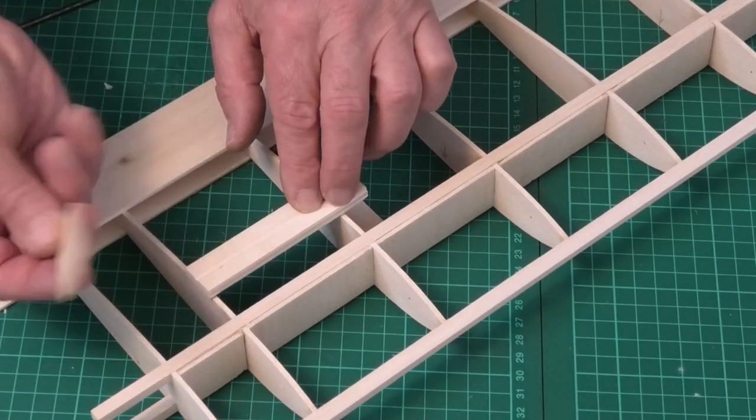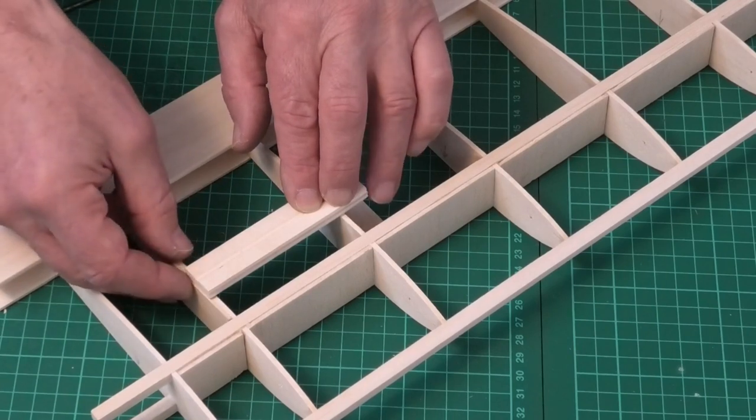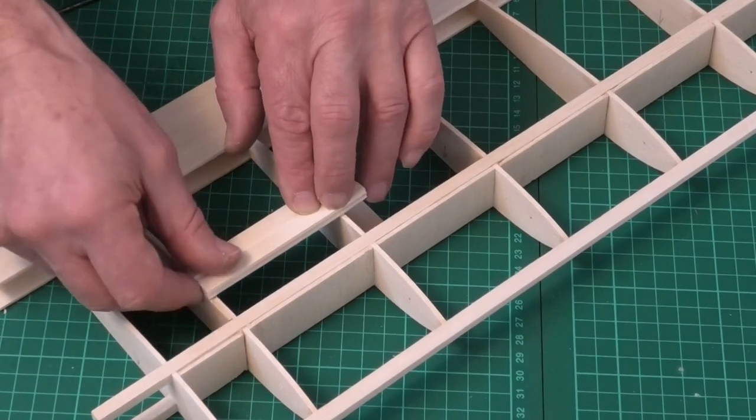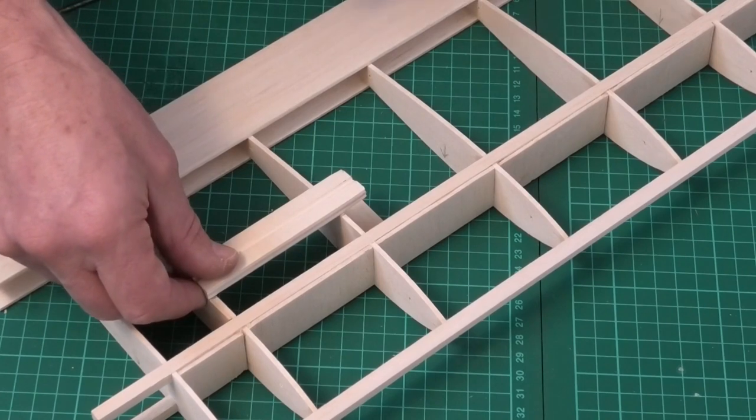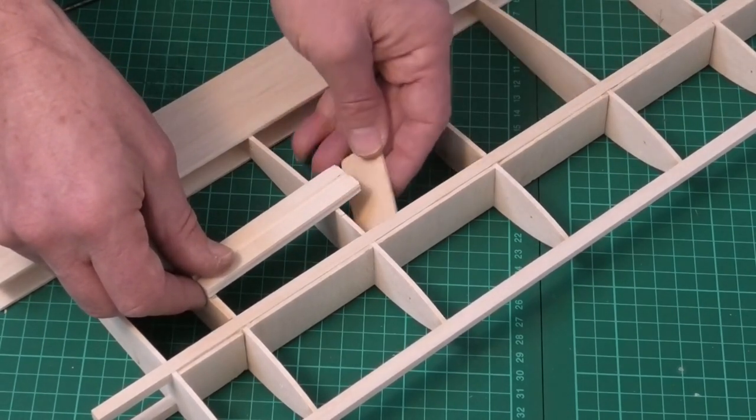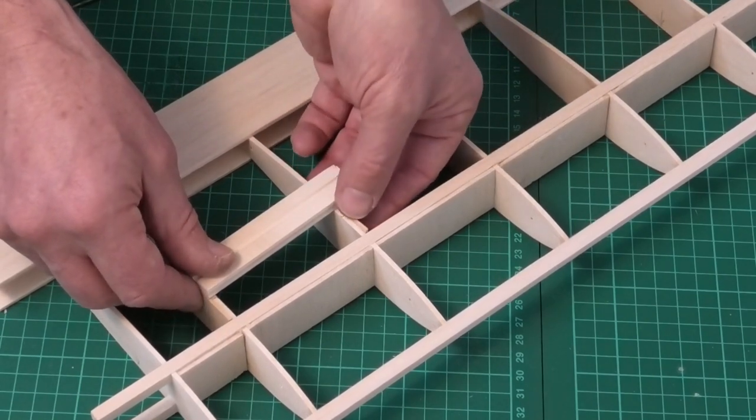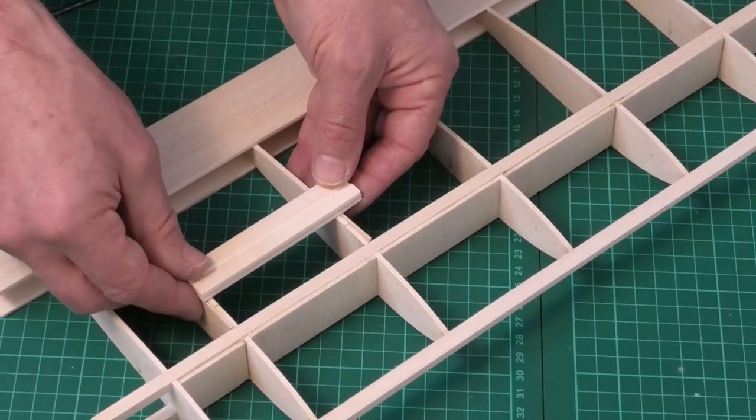This is 1.5mm ply and that is going to go onto there like that. So that's 1/16th ply. And these are just strengthening pieces to strengthen the rib and they butt up against the spar like that.